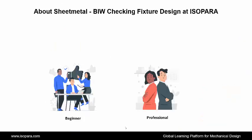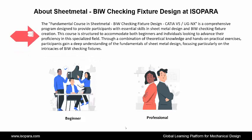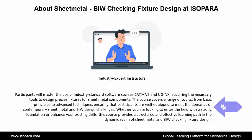Now, we see about the master course in sheet metal, BIW Checking Fixture Design using CATIA or UGNX at ISOPARA. The fundamental course in sheet metal, BIW Checking Fixture Design using CATIA or UGNX is a comprehensive program designed to provide participants with essential skills in sheet metal design and BIW Checking Fixture creation. This course is structured to accommodate both beginners and individuals looking to advance their proficiency in this specialized field. Through a combination of theoretical knowledge and hands-on practical exercises, participants gain a deep understanding of the fundamentals of sheet metal design, focusing particularly on the intricacies of BIW Checking Fixtures. Participants will master the use of industry-standard software such as CATIA and UGNX, acquiring the necessary tools to design precise fixtures for sheet metal components.